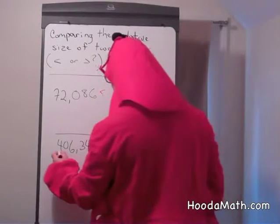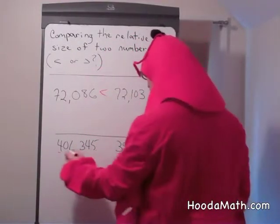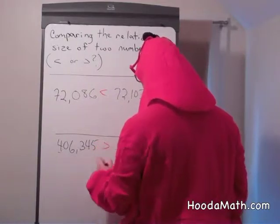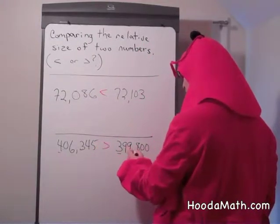So we first go to the left. There's a four here. There's a three here. Very easy. 406,345 is larger than 399,800.